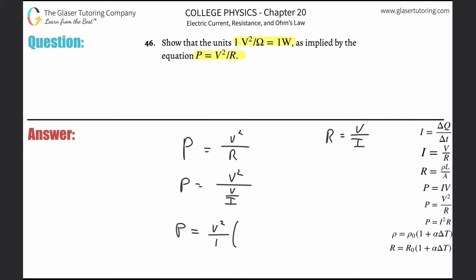And what we can do is we can simply now take the numerator, which I just put as V squared over 1, and multiply it by the reciprocal of the denominator, in other words, I over V.